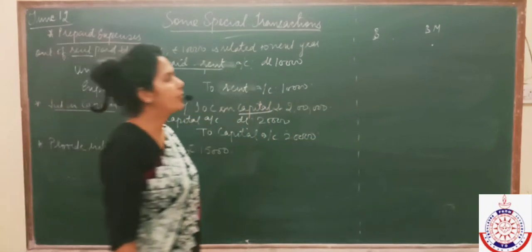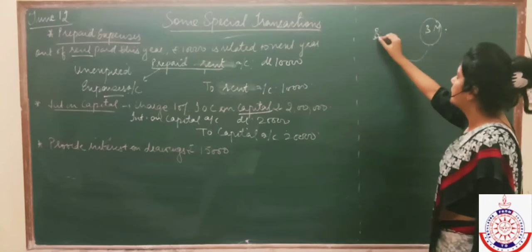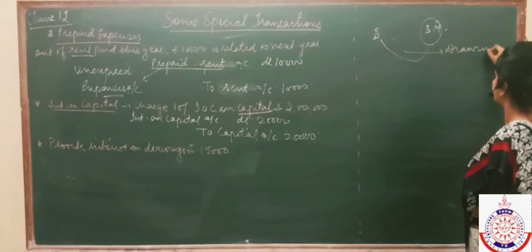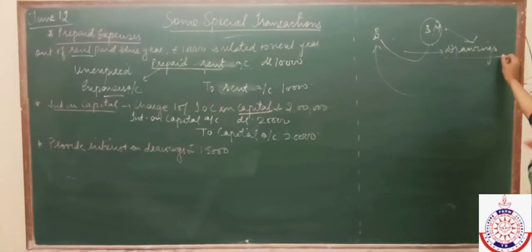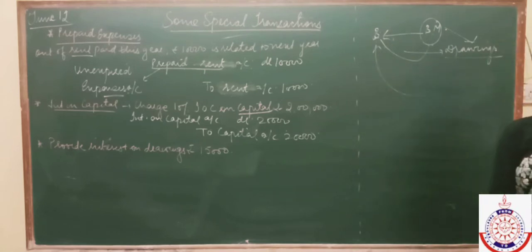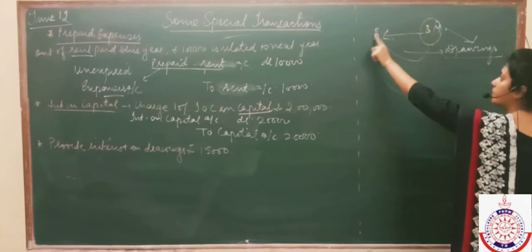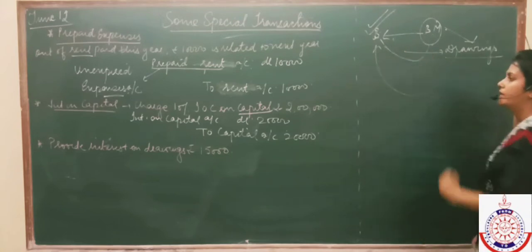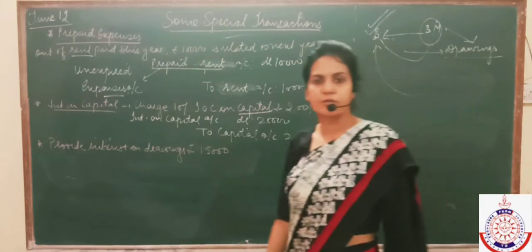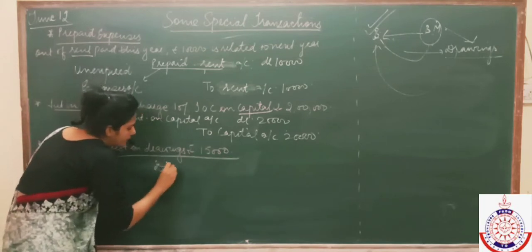Business and businessmen are two different entities. If the businessman takes money from the business for personal use, this is known as drawings. The businessman has to pay interest on these drawings to the business, because the person who withdrew the money pays the interest. Since business is getting the interest, it becomes an income for the business. The entry to pass is: drawings account debited.